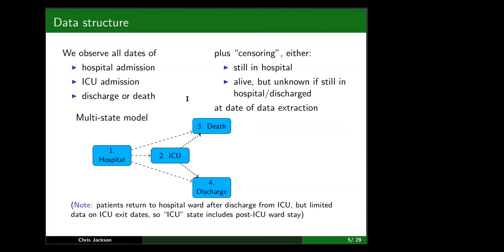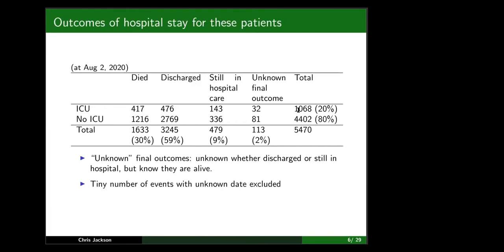We observe all deaths. There are two kinds of censoring: at the date of data extraction, if somebody has died we'll know because the data was linked to the ONS death register, but we don't know whether they've been discharged from hospital. Sometimes we know someone is in or out of hospital, but there was a lot of missing data where discharge just wasn't recorded. So there are two different censoring types: either still in hospital at the date of data extraction, or alive but unknown whether still in hospital. We'll handle this using likelihood-based statistical methods.